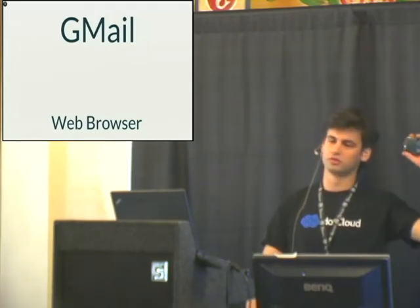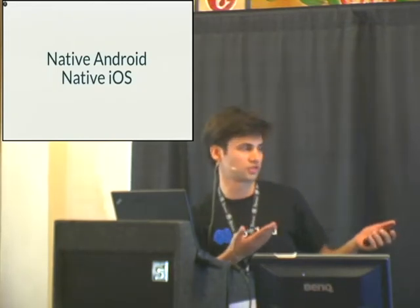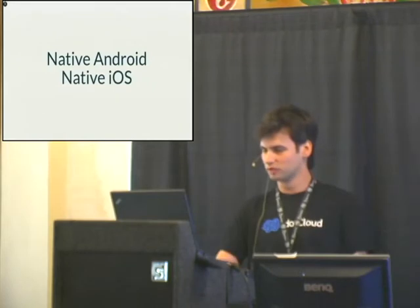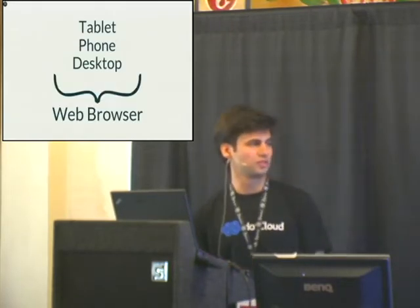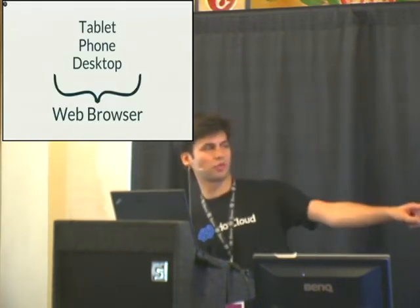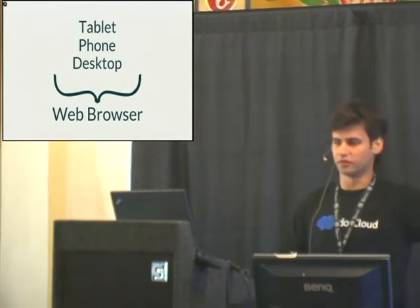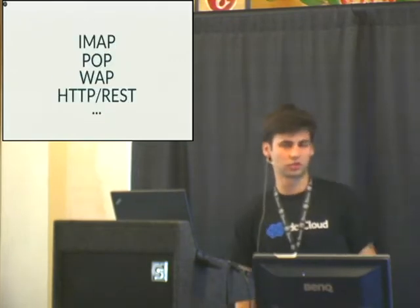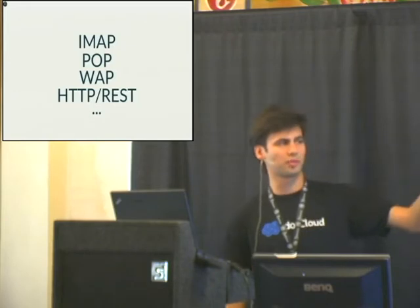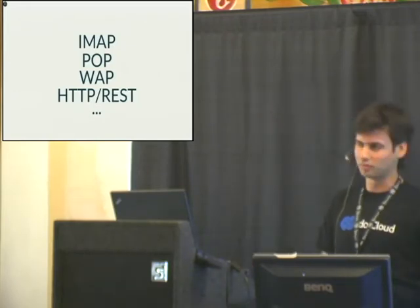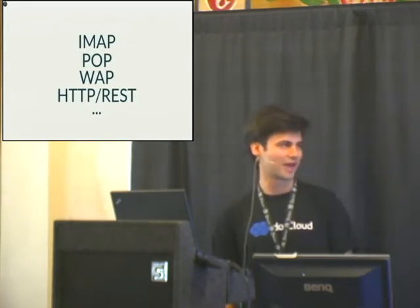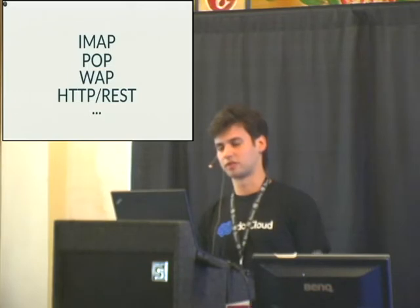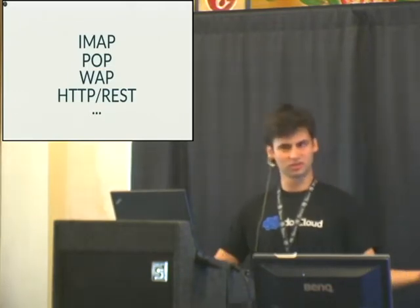But a lot of the time when I'm using Gmail, I'm not actually on my computer — I'm on my phone. So really there are at least two other interfaces in addition to the web: there's also the native Android and native iOS apps. And really that web browser application — there are multiple of those as well: a tablet, a phone, and a desktop version. And there's a whole bunch of other interfaces too — it's a mail service, so you have IMAP and POP, WAP, and for some of the functionality there's an HTTP and REST interface. So what is the app itself? The point is that the API becomes very important.